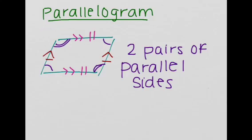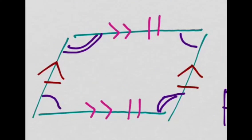Let's start off with the parallelogram. The parallelogram is a quadrilateral that has two pairs of parallel sides. Here's a parallelogram. This side right here is parallel to this side right here — that's one pair of parallel sides. And then this side right here is parallel to this side right here, so that's two pairs of parallel lines. These parallel lines are congruent, which means they have the same length.